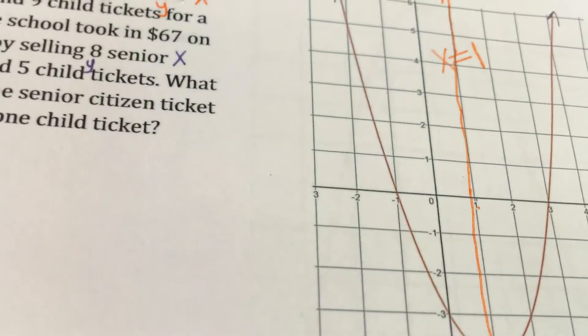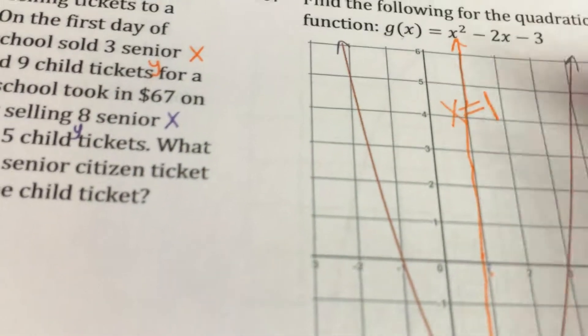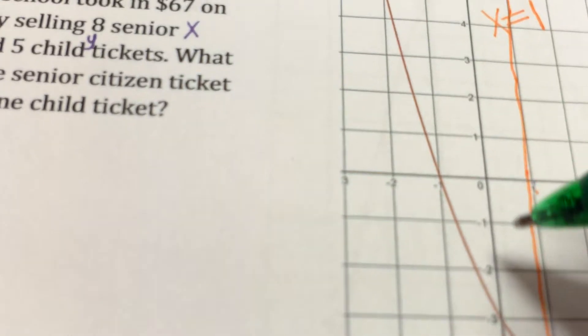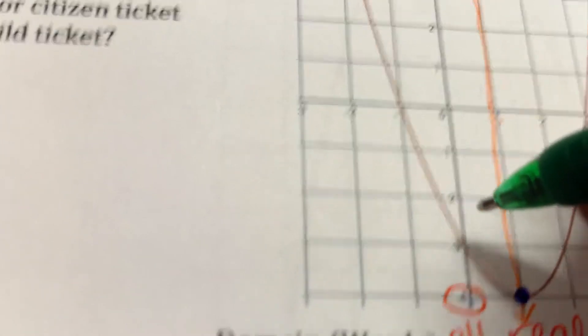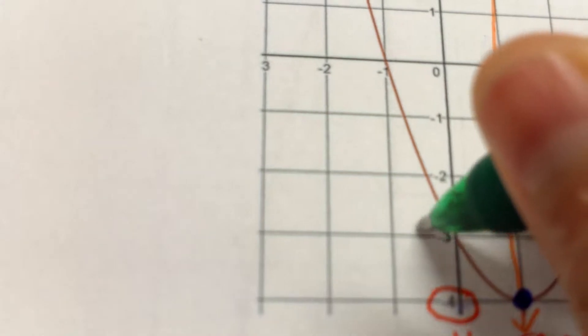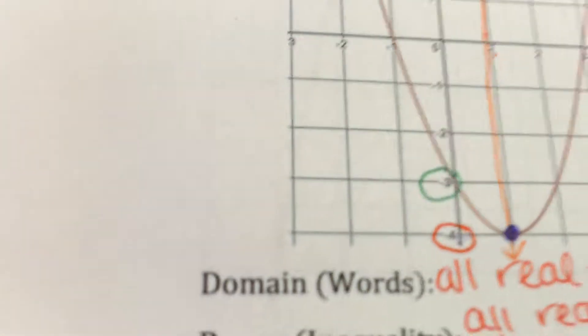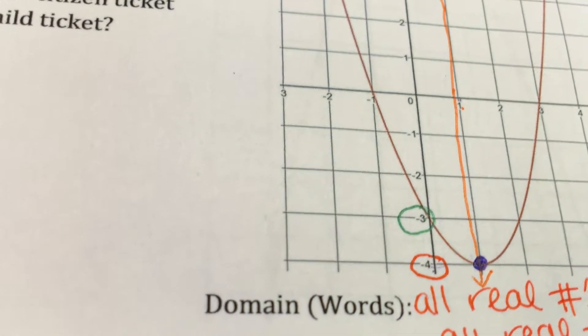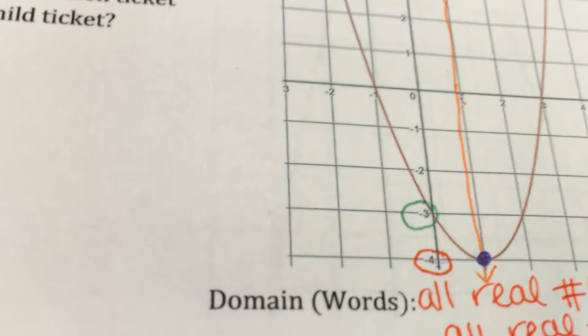The y-intercept. Where does it cross the y-axis? Here's my y-axis. Where does the graph cross the y-axis? Right there, which is at negative 3. But it's a point. So would it be negative 3, 0 or 0, negative 3? Well, your y is at the end, so it's 0, negative 3.